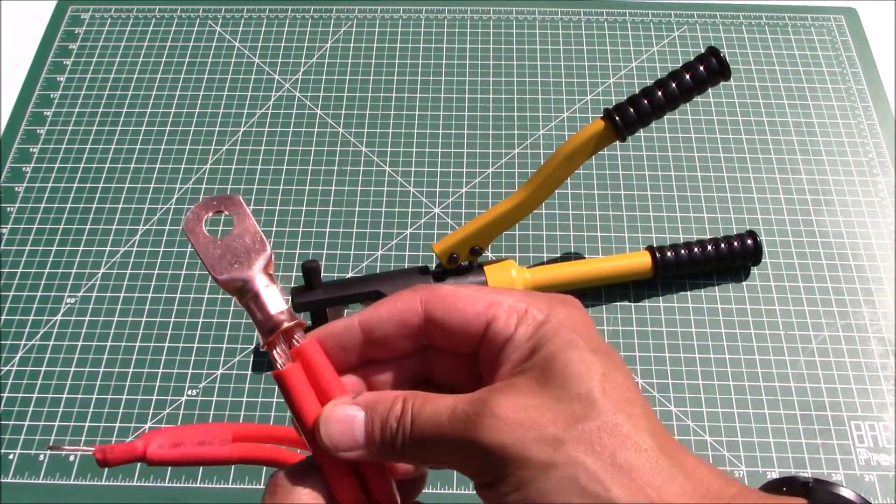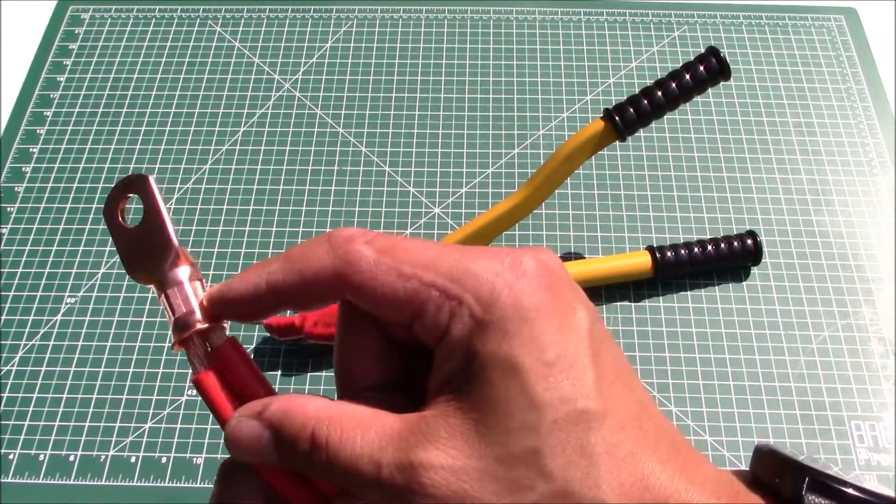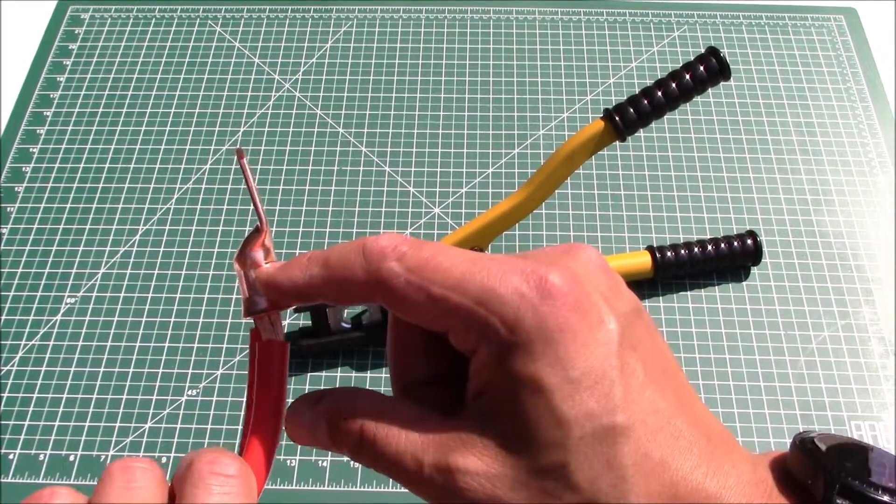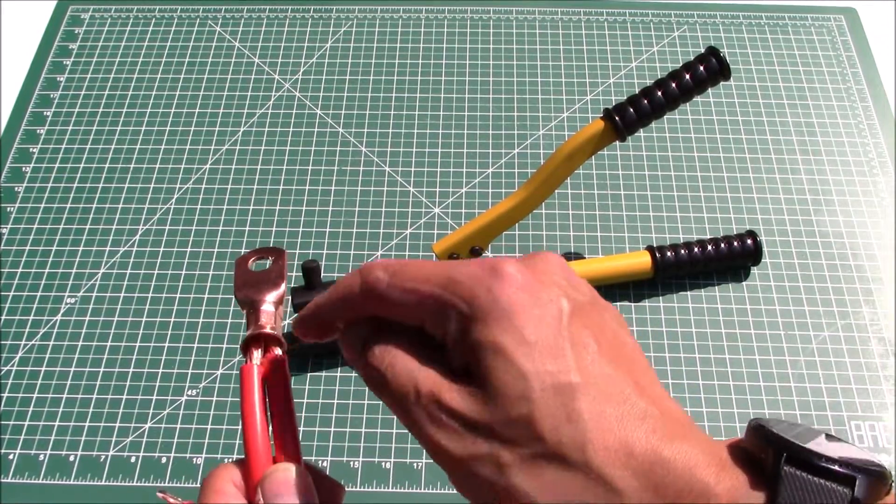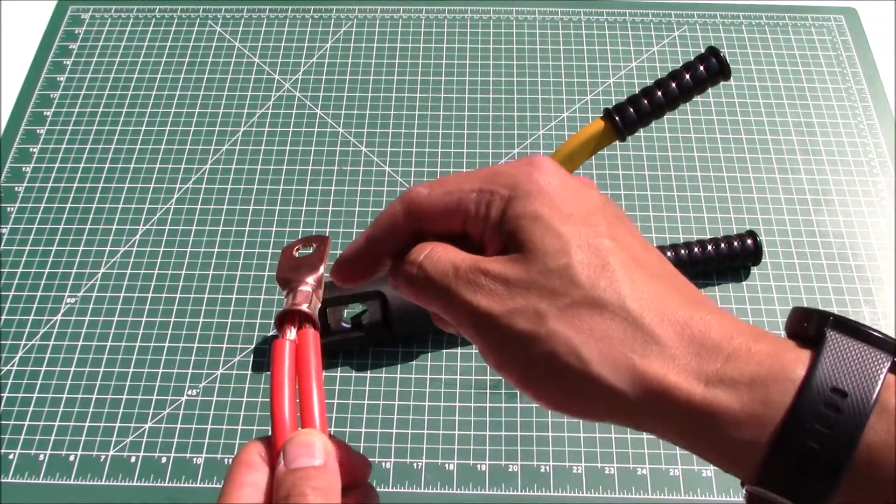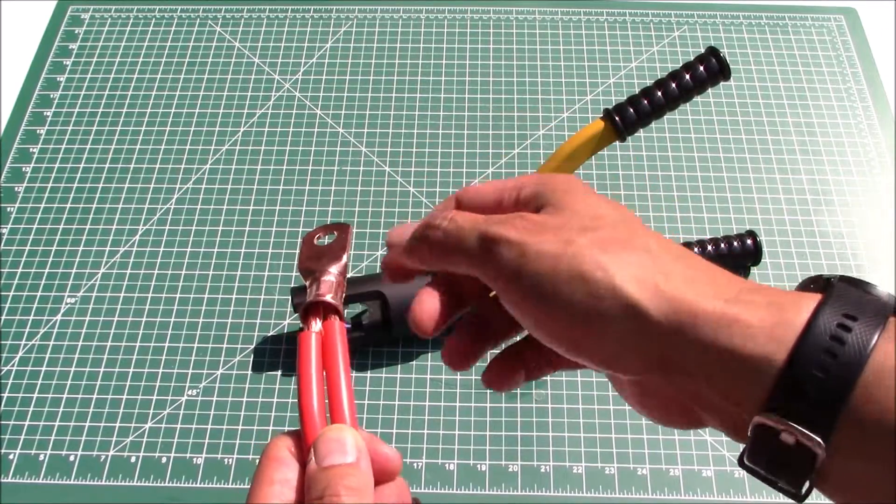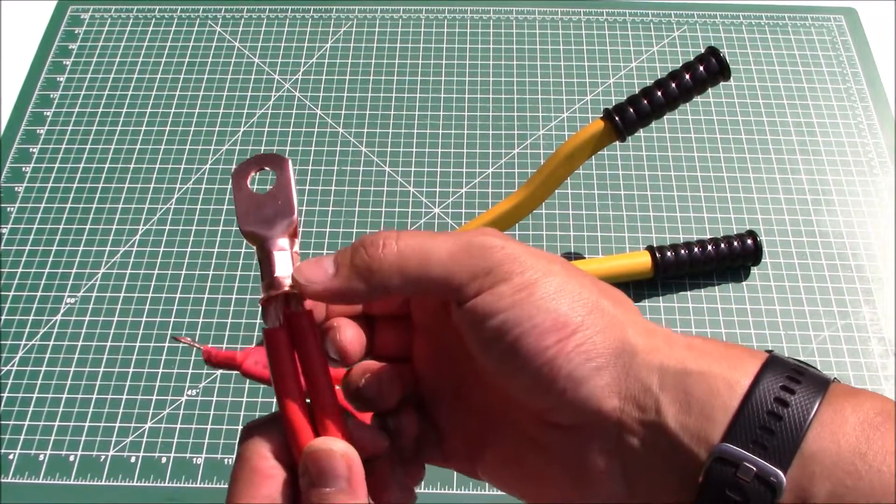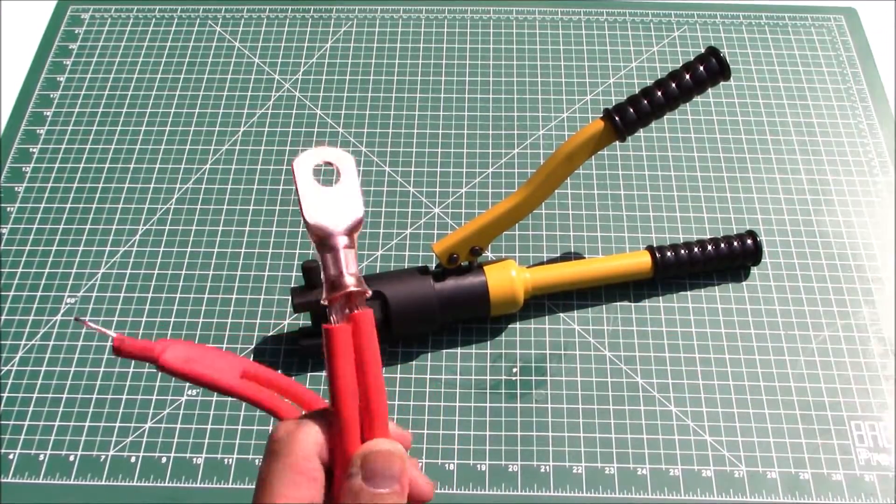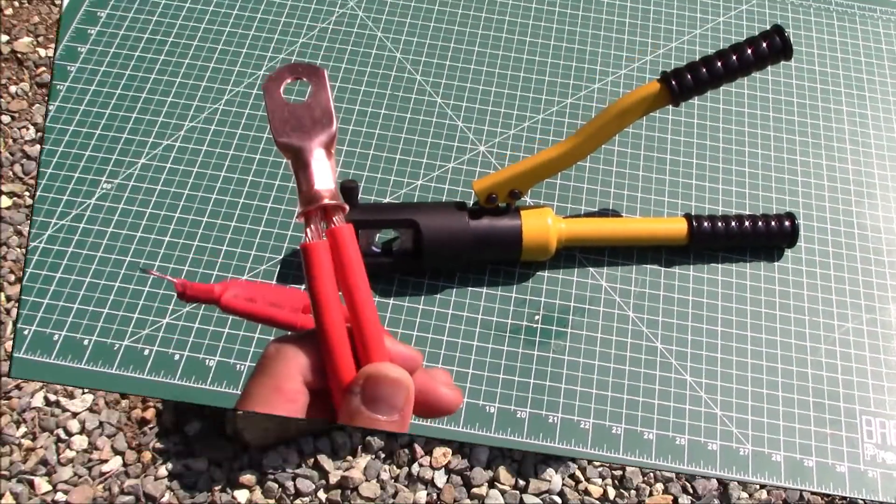We finished with the first crimp and as you can see what it's done is basically smashed the lug down around the wires. Now again because these wires are not exactly - they're a little bit too small, this lug is too big for it - it's actually not very tight right now. So I'm actually going to crimp it again one more time down here to make it hold a little bit better.